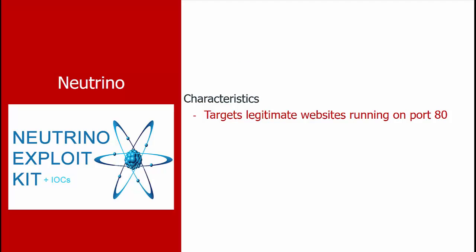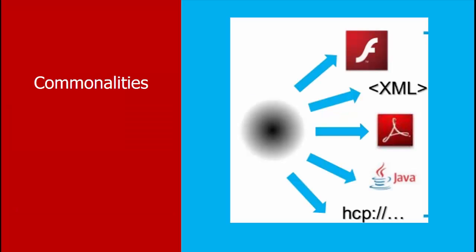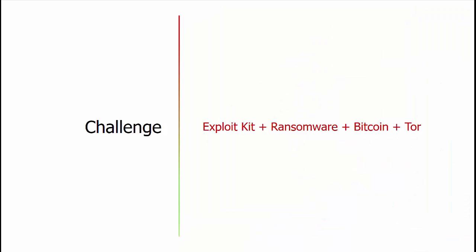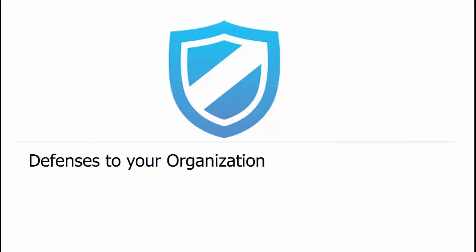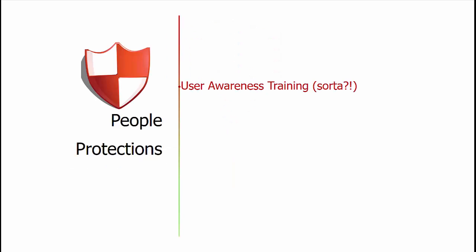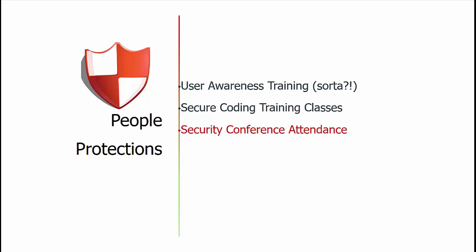There are commonalities among all of these as far as the particular types of exploits they favor. Our challenge is how to deal with an exploit kit that might drop ransomware paid in Bitcoin with delivery through Tor or Onion router mechanisms. For defenses at an organizational level regarding people: user awareness training needs to be concrete — giving people actual to-dos, things to look for, and tools that will help them. Secure coding is very important because, as we've seen, compromised domains and legitimate websites had web application vulnerabilities. Attendance at security conferences like this also increases awareness.